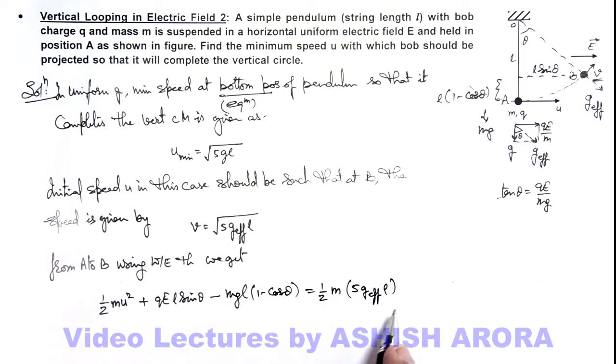So on simplifying this relation I'll get the value of speed with which bob should be projected at point A so as to complete the vertical circular motion. It is given by root of.